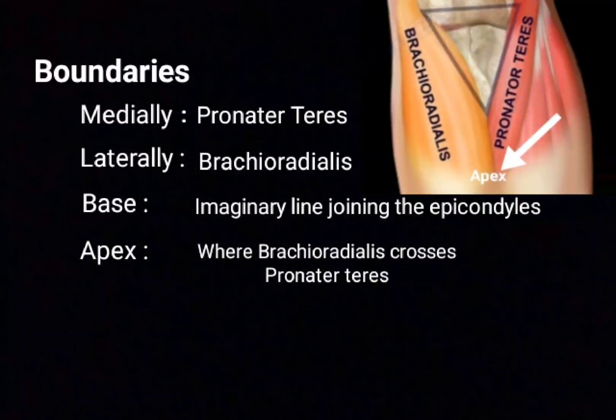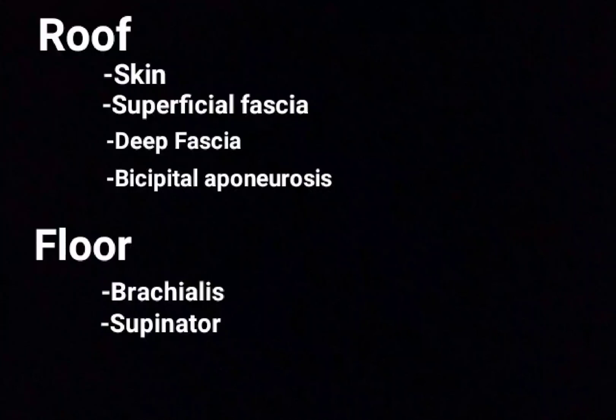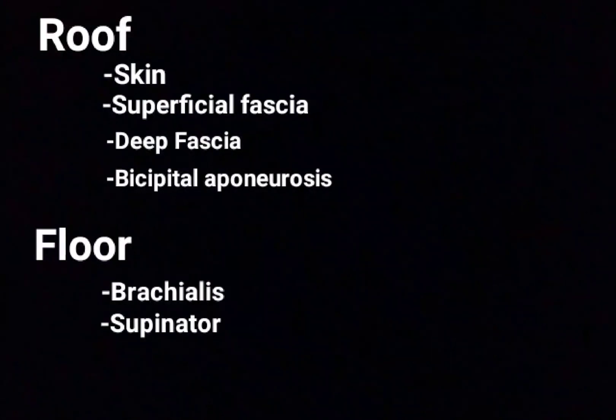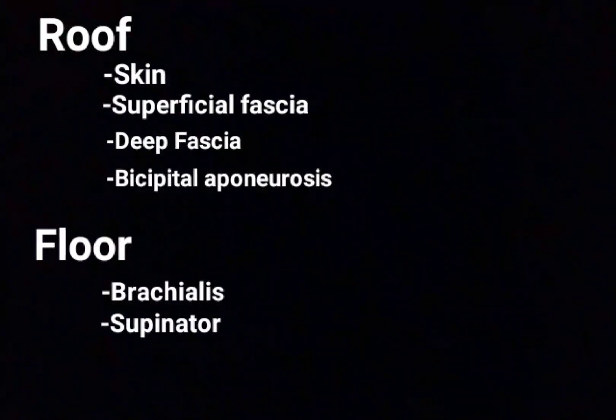The roof is formed by skin, superficial fascia, deep fascia, and the bicipital aponeurosis. The floor is formed by brachialis and supinator. Now let's talk about its contents.